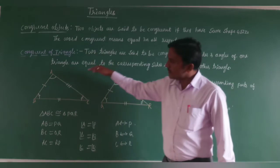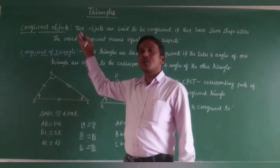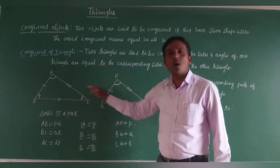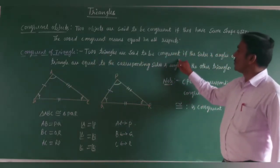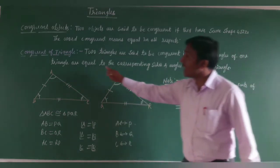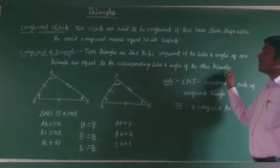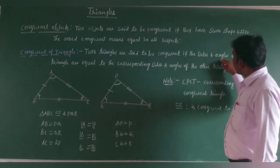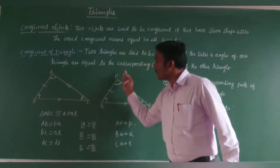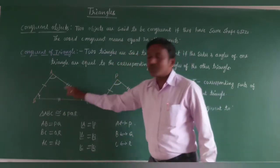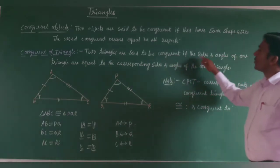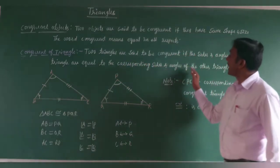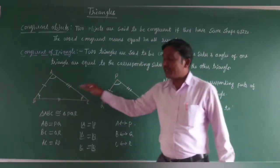Now let us consider congruence of triangles. When we say two triangles are congruent to each other, two triangles are said to be congruent if the sides and angles of one triangle are equal to the corresponding sides and angles of the other triangle. I will discuss what we mean by 'corresponding.'